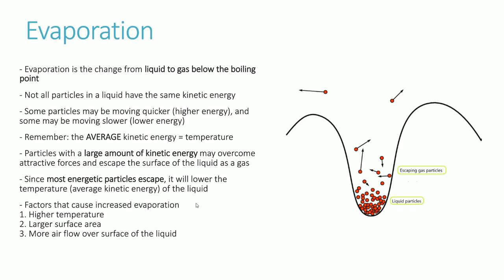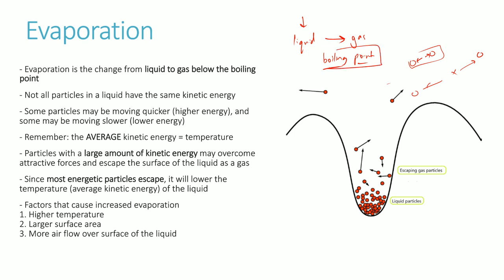Evaporation is the change from liquid to gas, but the important distinction is that it occurs below the boiling point. We know that when a liquid becomes a gas through heating, that transition is boiling — for water, this happens at 100°C. However, a liquid can also form a gas below the boiling point, and when that happens, we call it evaporation.